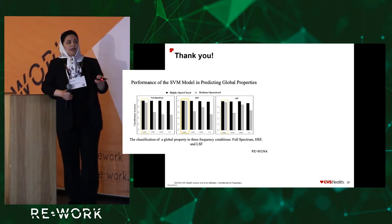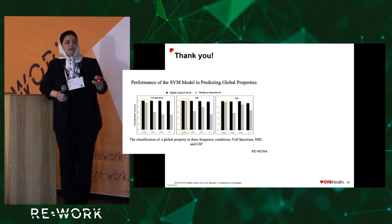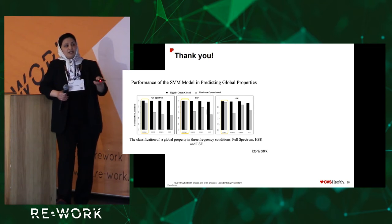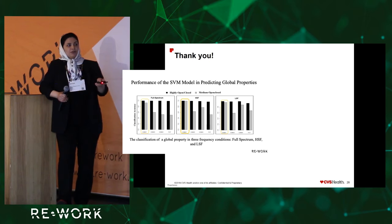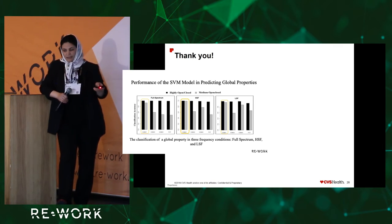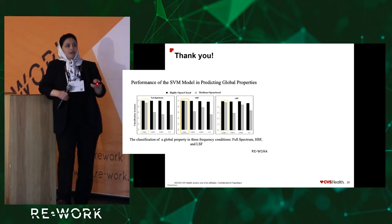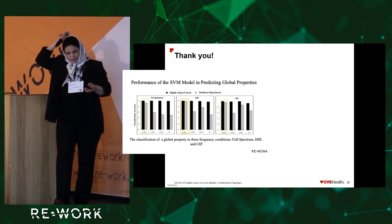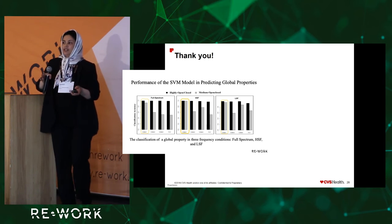Based on these strong ground-truth labels, we fed those images into convolutional networks. One state-of-the-art network for scene perception used was built on VGG16. We applied those images to this network, extracted features from different convolutional layers, and used a support vector machine to categorize those images based on global properties — for example, whether they are open or closed, or natural or man-made. We repeated this process across different spatial frequencies, including low, high, and full spectrum.